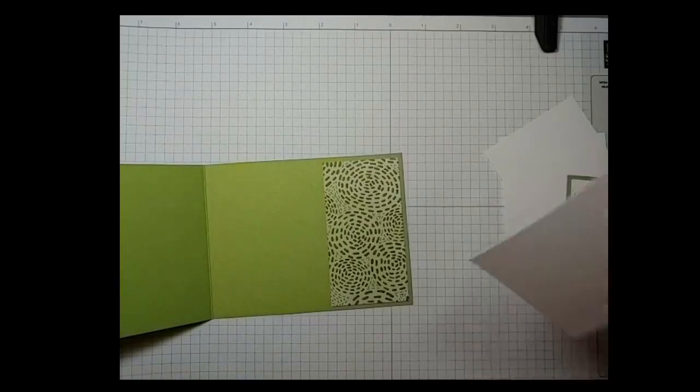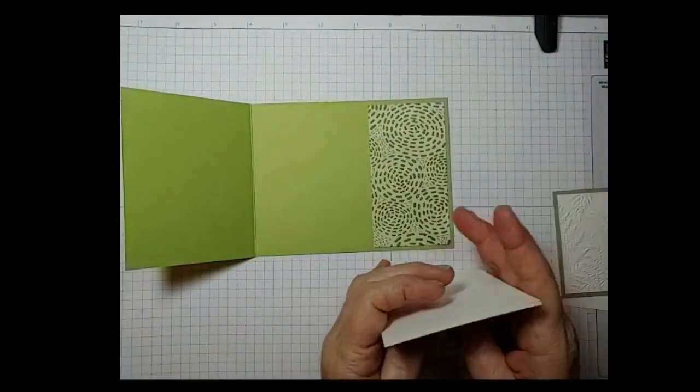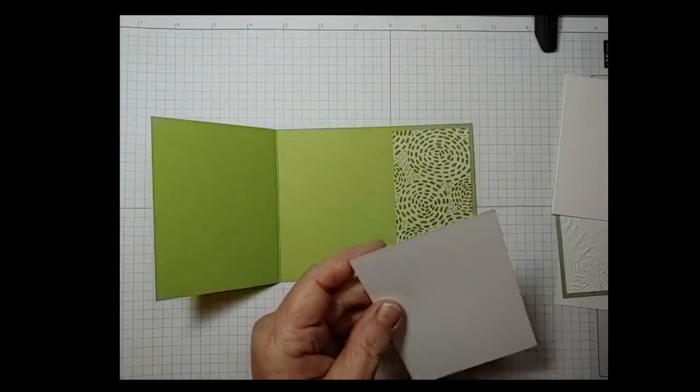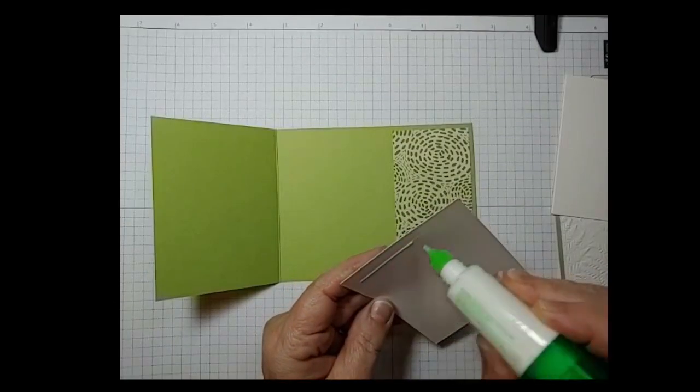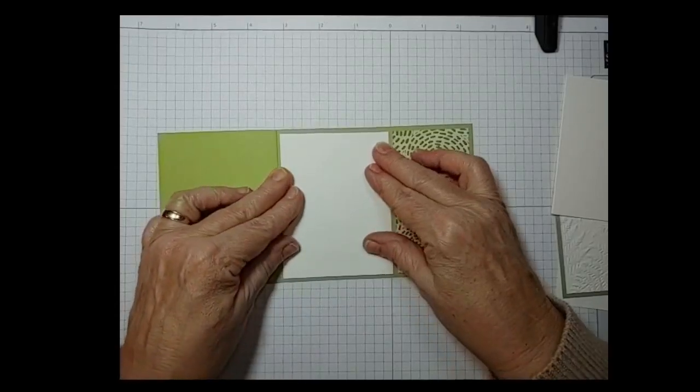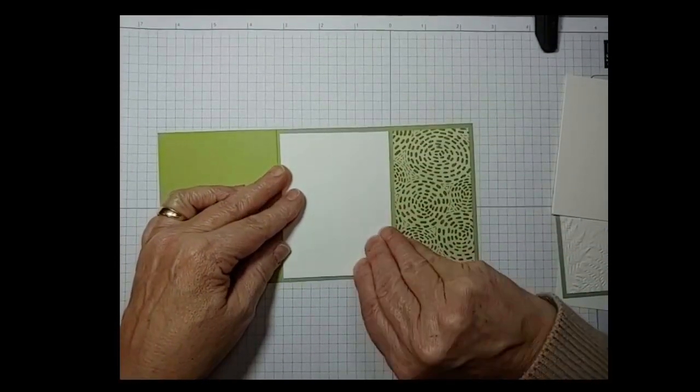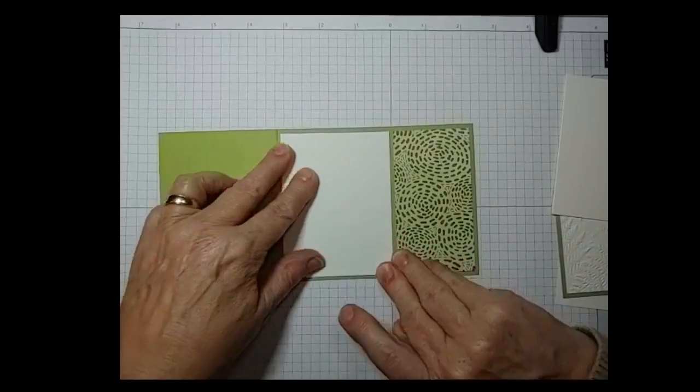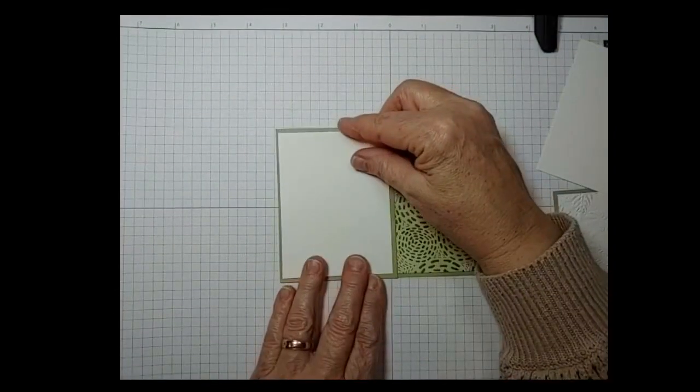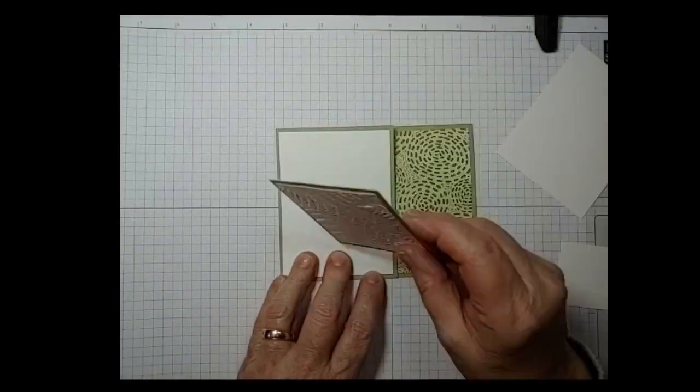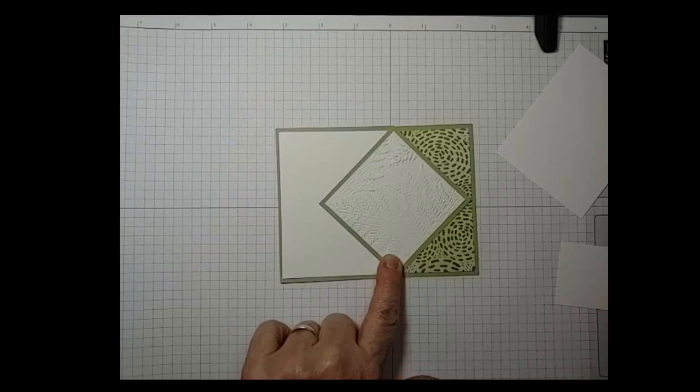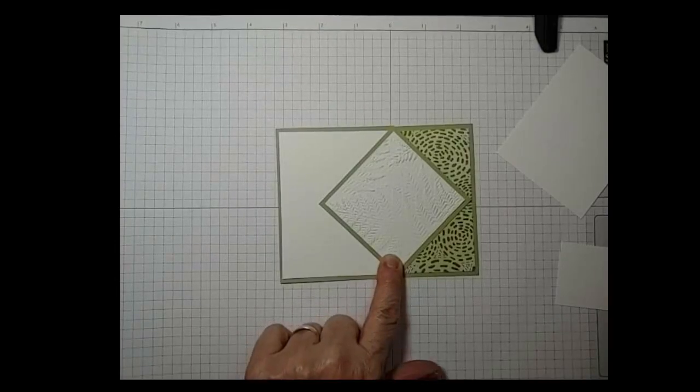This designer series paper is two and an eighth by four inches and it's going to go here at the end. These pieces are three inches by four inches and one of them is going inside here where you could write to people. I'm also going to stamp on the front, but this is actually going to go on this way. I think this is a design that I will use again and again. I just think it's beautiful.